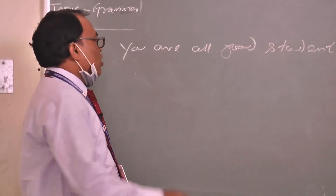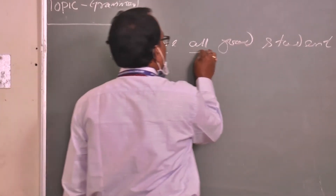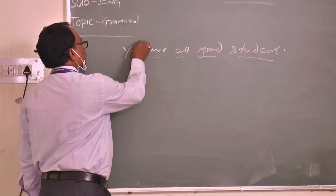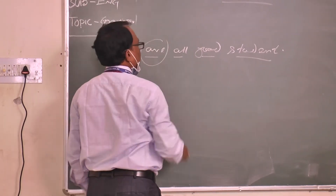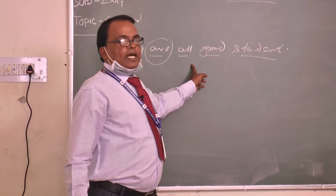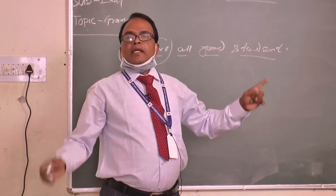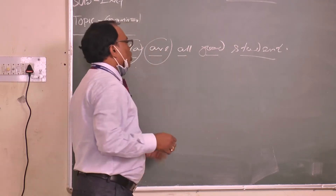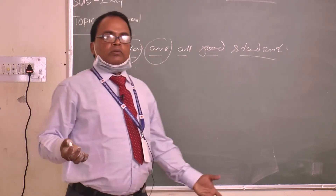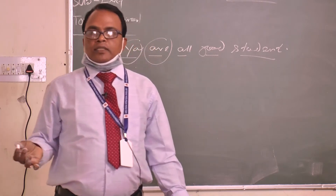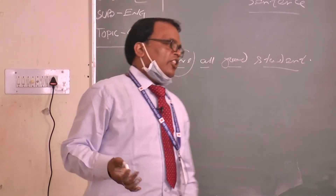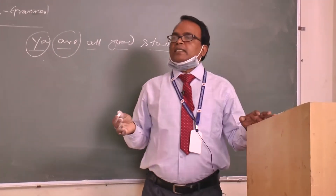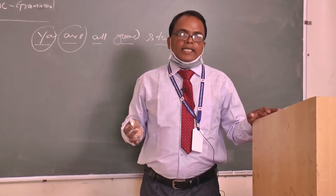How many words are there? One, two, three, four, five. The subject is there, and all other words are arranged correctly in the proper order. If you write it like 'all are good students you,' it is not systematic. So when we present our feelings with proper words in the correct order, then we can call it a sentence.